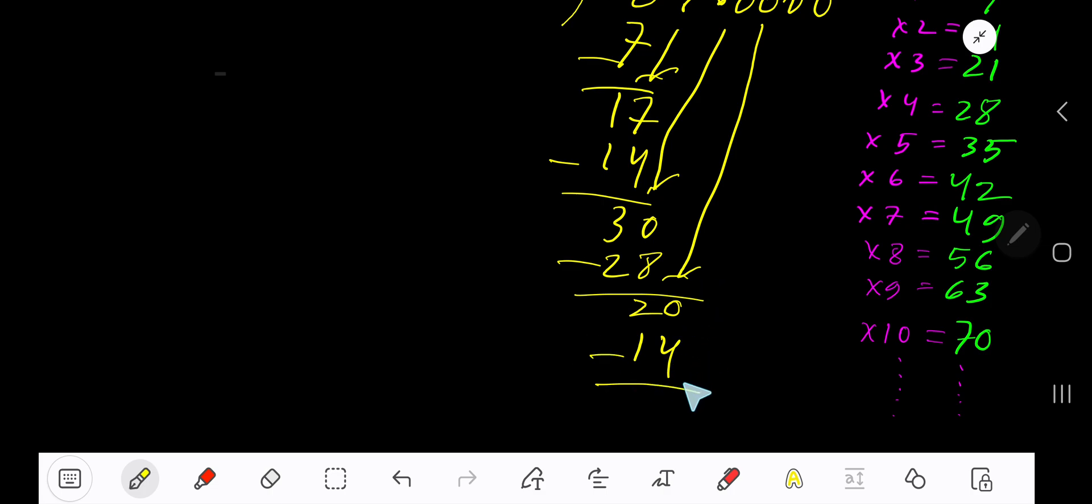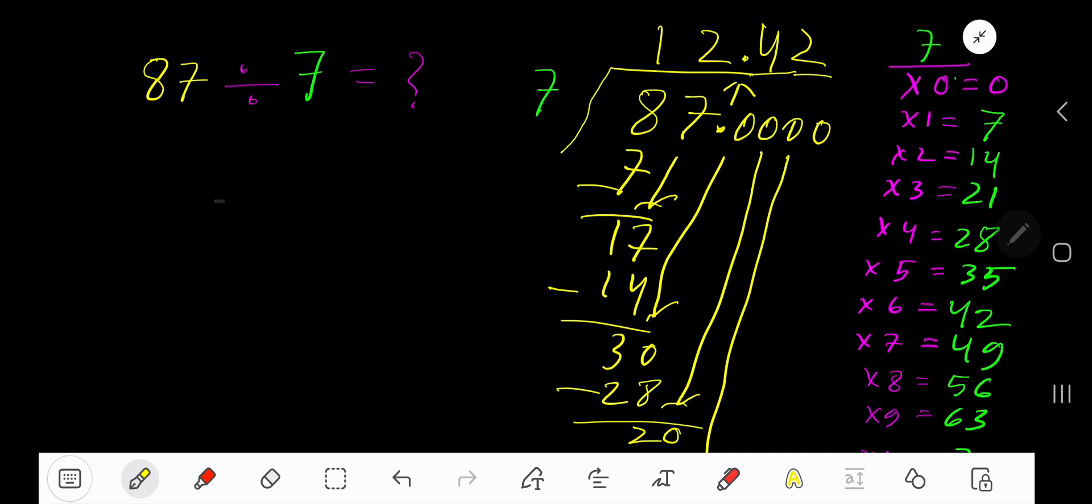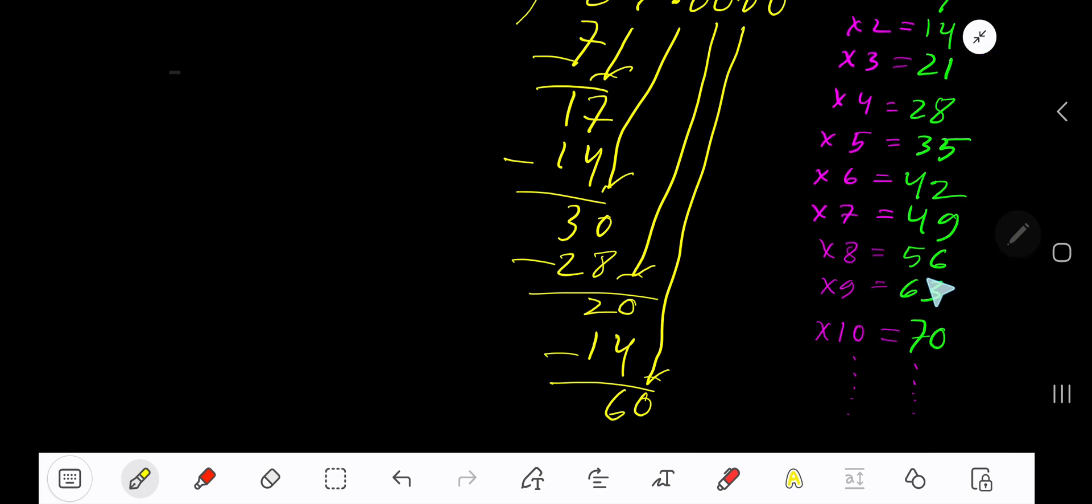Subtract. You are getting 6. Bring down another 0. 7 goes into 60 how many times? 8 times.